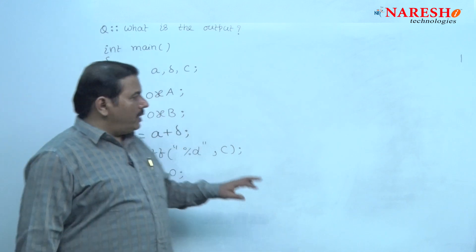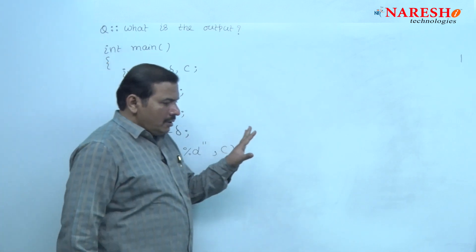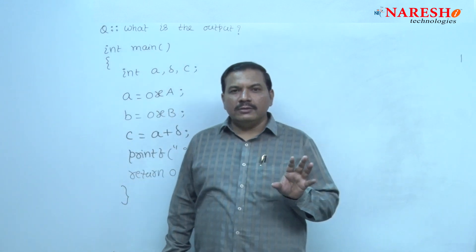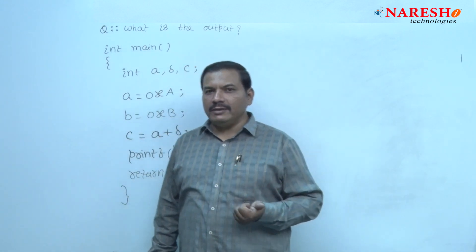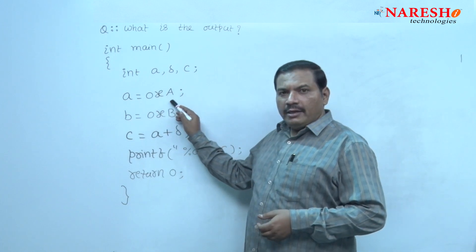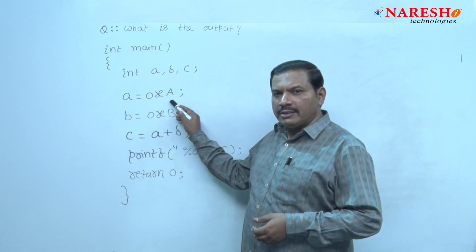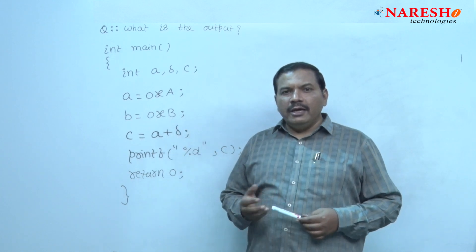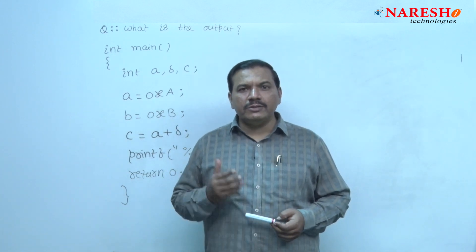Let us look at this question. In this question, two integer constants are given of type hexadecimal integers. 0xA is a hexadecimal integer constant and B is another hexadecimal integer constant. In C language,